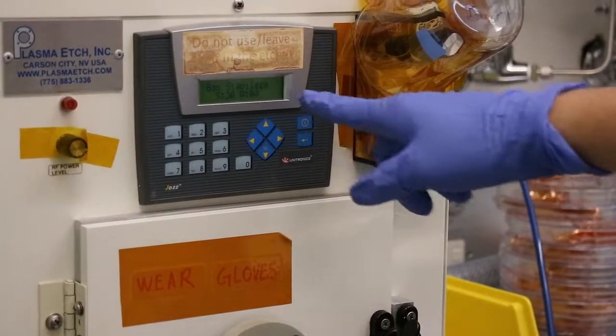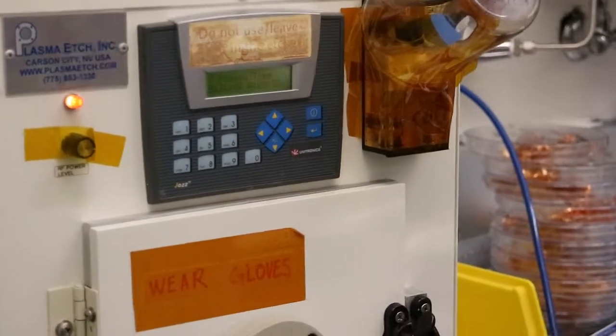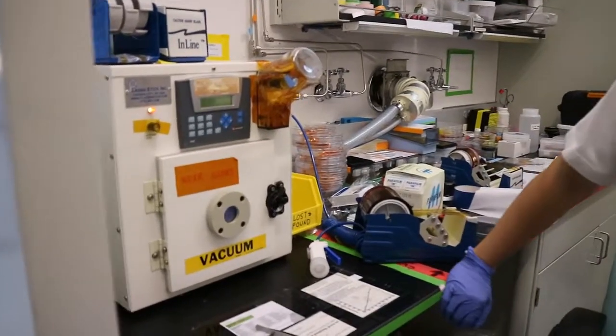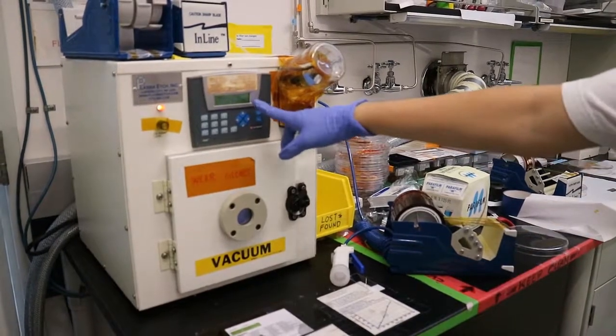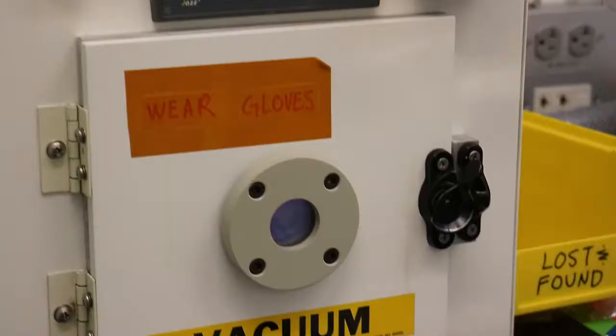Gas stabilize means the O2 plasma is coming inside and trying to stabilize to make sure the same pressure of the chamber. Now plasma has started, and you can see the slightly bright plasma inside.